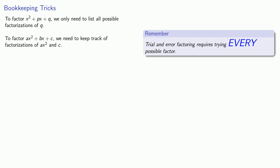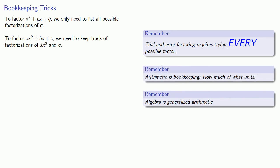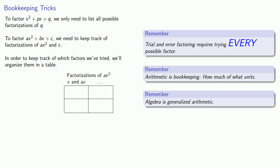Trial and error factoring requires trying every possible factor. This can be a lot of bookkeeping, and that's okay. Arithmetic is bookkeeping, and algebra is generalized arithmetic. To keep track of which factors we've tried, we'll organize them into a table with columns as the factorizations of ax² and rows as the factorizations of c.